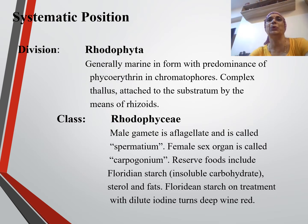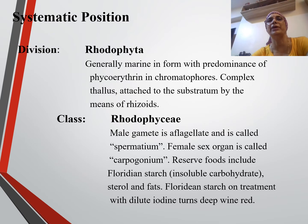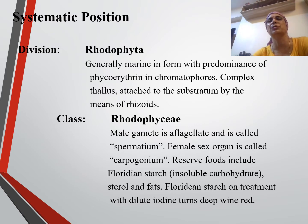Division Rhodophyta: generally marine form with predominance of phycoerythrin chromatophores, complex thallus attached to the substratum by means of rhizoids. Class Rhodophyceae: male gametes, if non-flagellated, are called spermatium. Female sex organ is called carpogonium. Reserved food includes floridean starch, insoluble carbohydrates, sterols and fats.